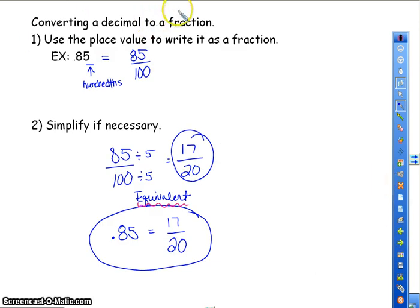Now, when I convert a decimal to a fraction, you're using place value. So you're going to use place value to write it as a fraction. This is written as 85 hundredths, because the 5 is in the hundredths spot.